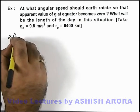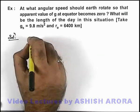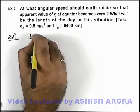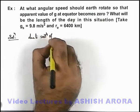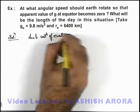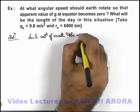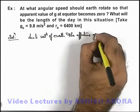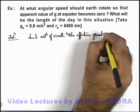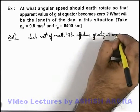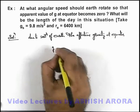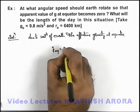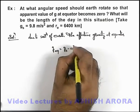In this solution we can write that, due to rotation of Earth, if we calculate the effective gravity at equator, then this effective gravity at equator can be simply written as g_s minus omega square r_e.